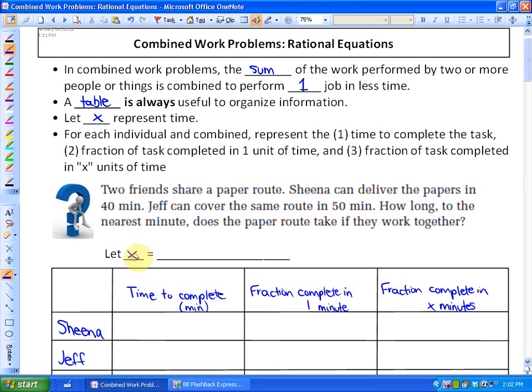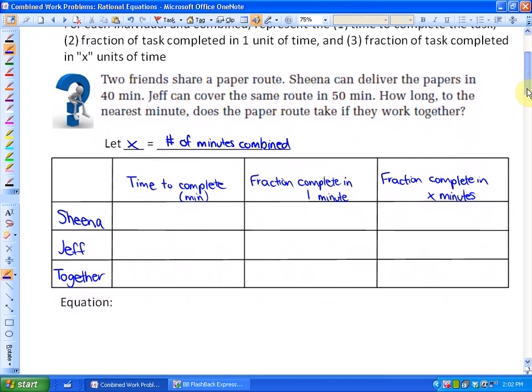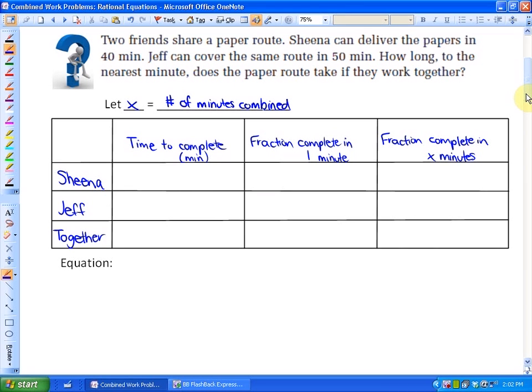First, let x represent the number of minutes combined. For Sheena, the time to complete is 40 minutes. The fraction she would complete in one minute is 1/40, and in x minutes would be x/40. For Jeff, it takes 50 minutes to complete. In one minute, he'd be done 1/50 of the job, or in x minutes, x/50 of the job.